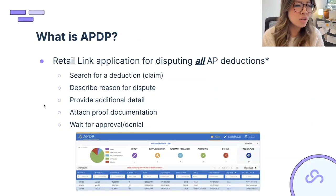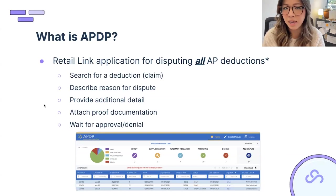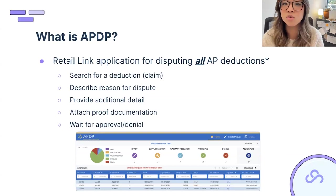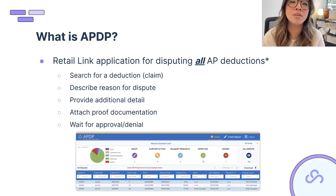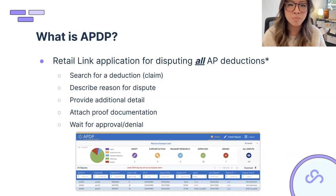You should have access to APDP automatically. If you don't, check with your Retail Link admin. If they don't have access either, reach out to the Retail Link help desk and they can grant access. You don't have to pay for this — it's available to you as a supplier.